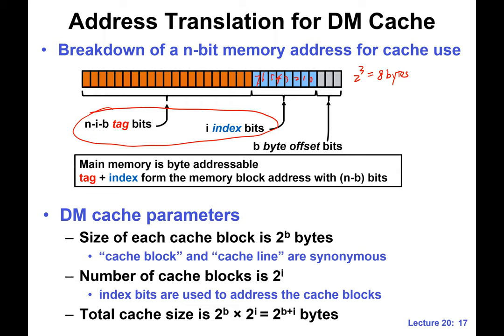We can formally define the key parameters of the cache. Small b is the number of offset bits — this defines the size of the cache block. I is the number of index bits — this defines how many cache blocks we have, because we use it to address the cache. The total cache size in terms of data bytes is two-to-the-I blocks times two-to-the-b bytes per block.